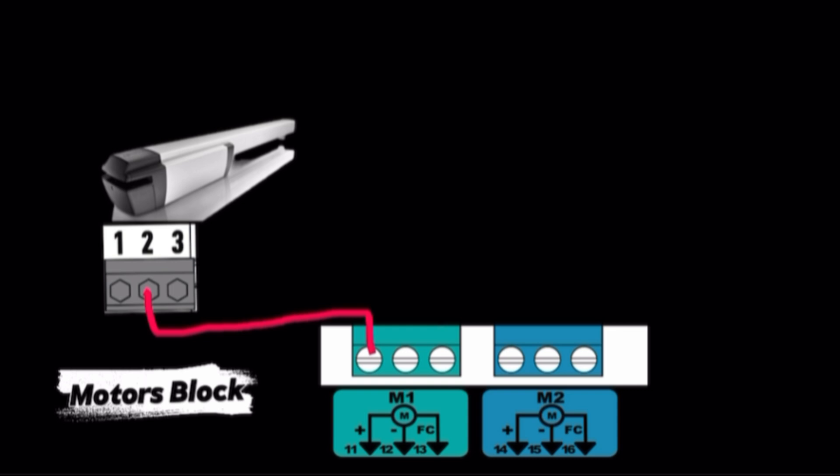Connect M1. Terminal 11 is DC positive wire of power supply. Terminal 12 is DC negative wire of power supply. Terminal 13 is end limit wire only for Xingo motor.